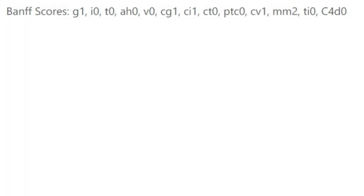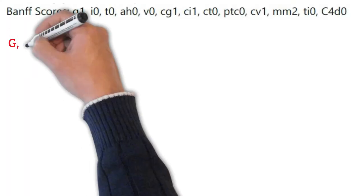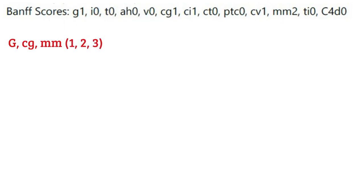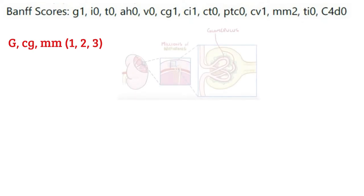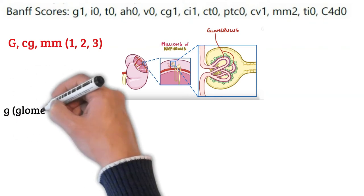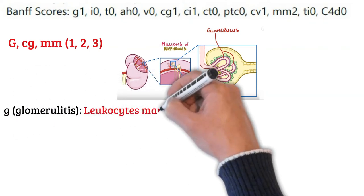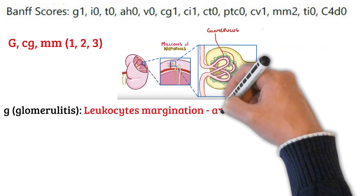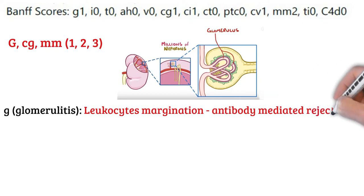So what are these letter codes? The following is a brief explanation of each of the Banff codes organized by structure involved. In the glomerulus, we have G, Cg, and Mm. G stands for glomerulitis, which represents the accumulation of white blood cells within the glomerulus — called leukocyte margination — and this is a marker of humoral or antibody-mediated rejection.